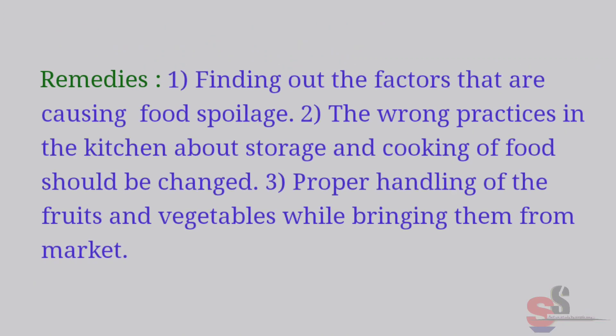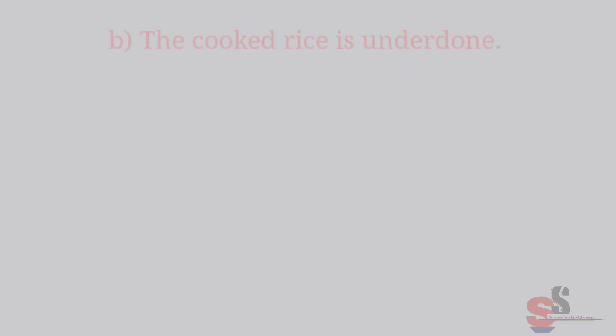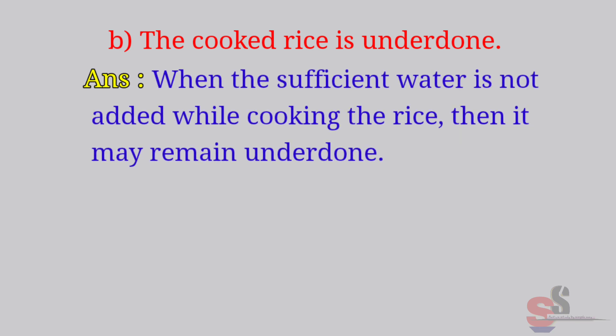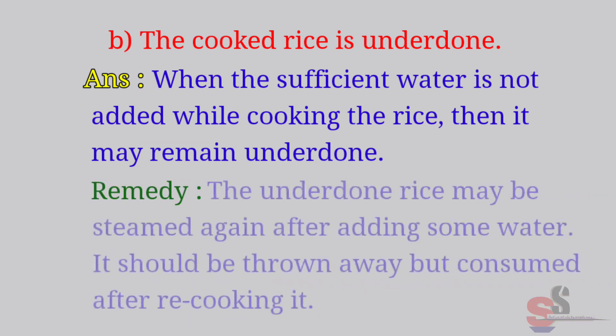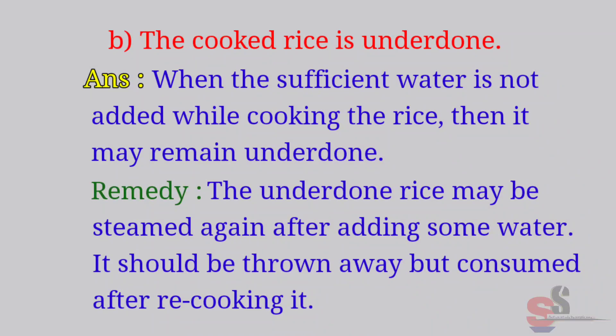Remedies: finding out the factors that are causing food spoilage, changing wrong practices in the kitchen about storage and cooking of food, proper handling of fruits and vegetables while bringing them from market. B. The cooked rice is underdone. Answer: When sufficient water is not added while cooking rice, it may remain underdone. Remedy: The underdone rice may be steamed again after adding some water. It should not be thrown away but consumed after re-cooking.